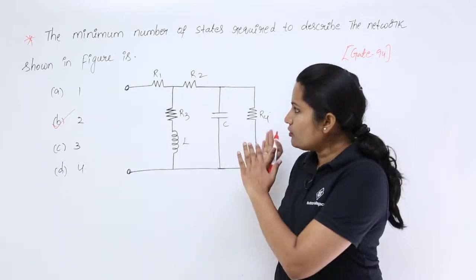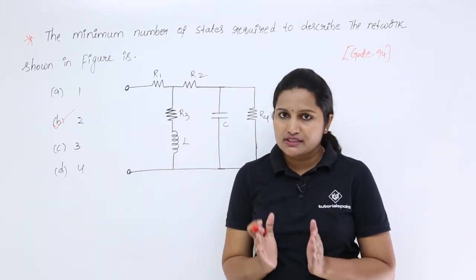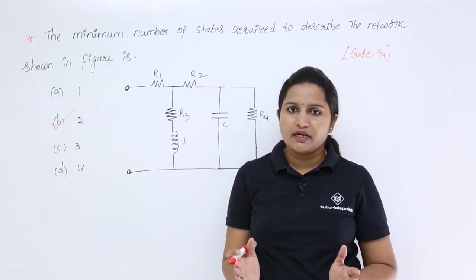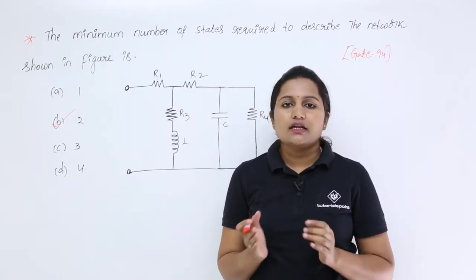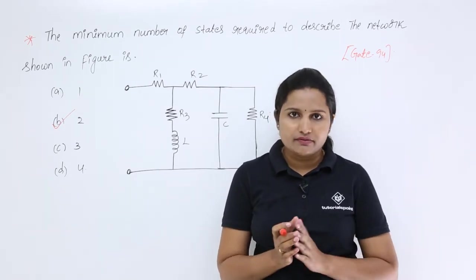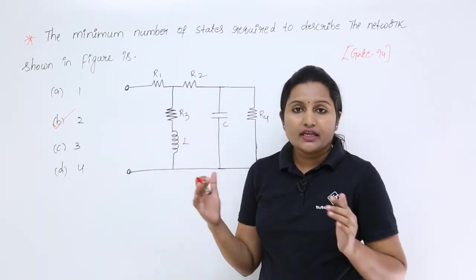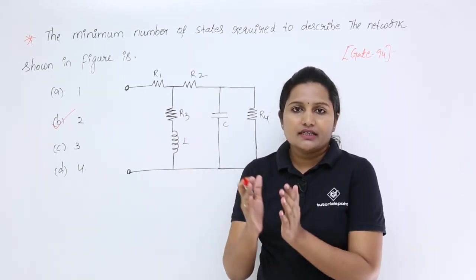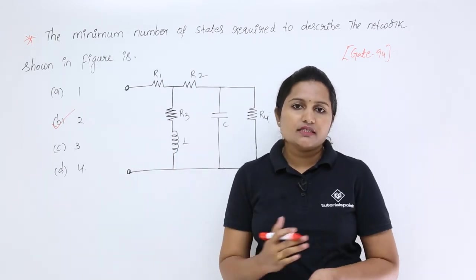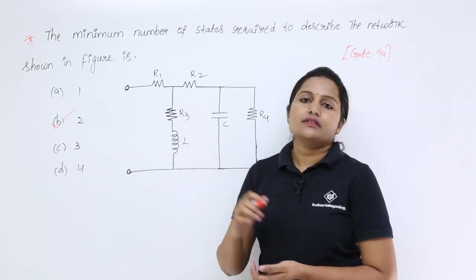When you get this type of question, no need to worry — just see the number of memory elements. Depending upon the number of memory elements, we can say the number of states required to describe a particular network. After passing through those states, we can clearly describe the network. This is how we solve problems related to state networks.